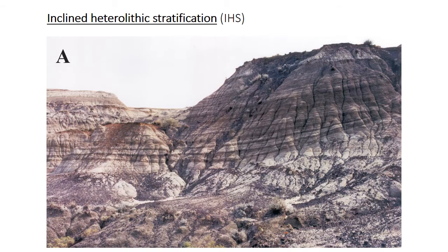Here's an example of inclined heterolithic stratification, or IHS. The dipping bounding surfaces are pretty prominent, dipping towards the left and probably out of the screen a little bit. The lighter-colored beds are more sand-rich, representing the higher energy parts of the flow, and the darker layers are the mud drapes or finer sediment drapes. At this scale, ripples are not visible, but if present they should be perpendicular to these large dipping beds, oriented into or out of the screen.